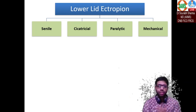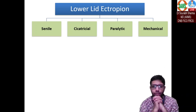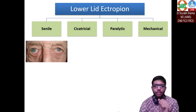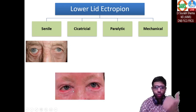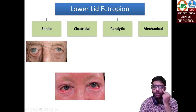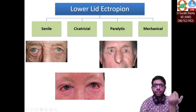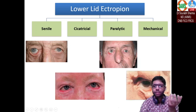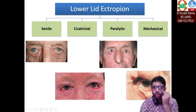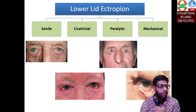So the four simple causes are: senile (because of old age), cicatricial (pulling the eyelid outside), paralytic (seventh nerve palsy, orbicularis weakness), and mechanical (a tumor mass pulling the eyelid down). Congenital ectropion can also occur.